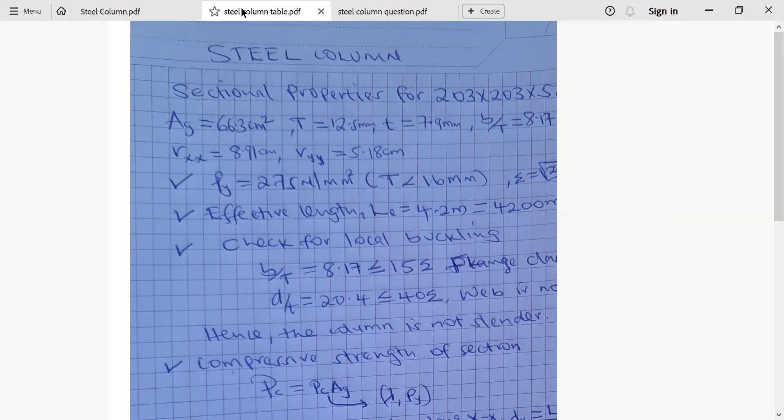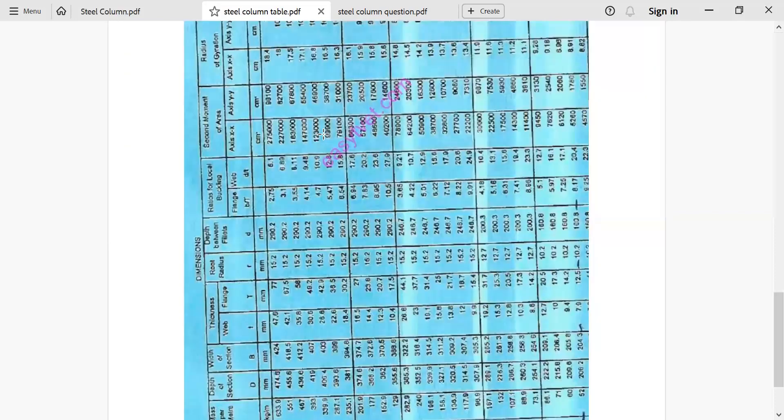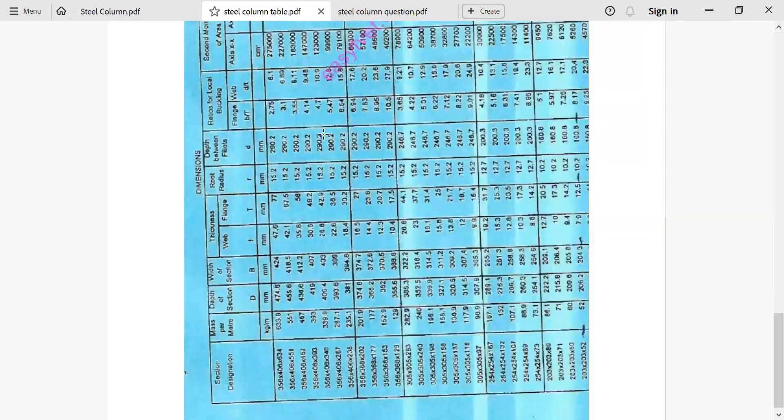Here it is. Our section was... So you come here. Now look at the titles. It's section designation. So under section designation, we locate our section. Our section is the last section. We can see 203 by 52. It is found on the extreme right hand side.